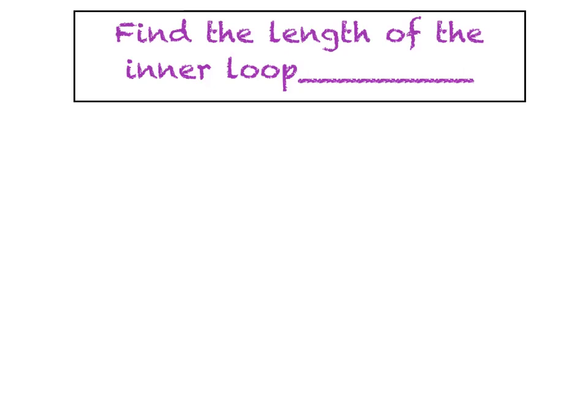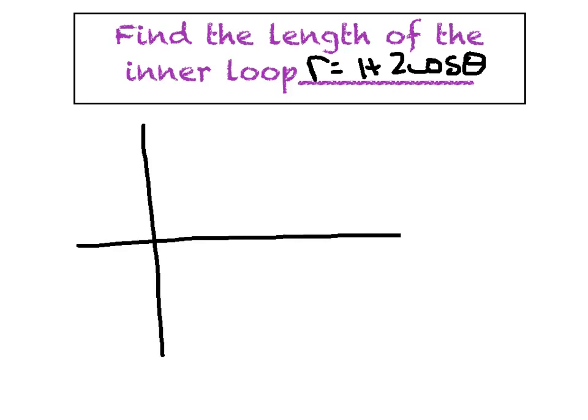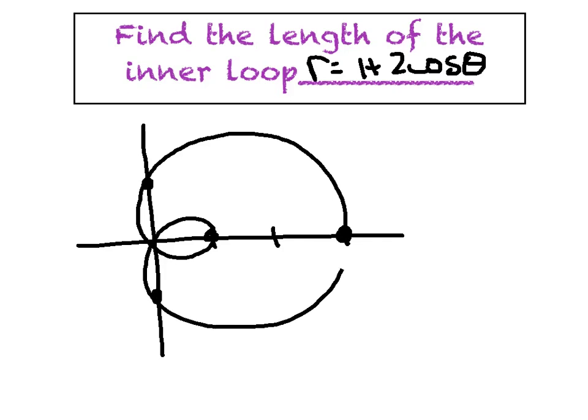Our next one, we're going to talk about, instead of the length of the entire curve, let's find just the length of the inner loop for the curve R equals 1 plus 2 cosine of theta. So we've got a nice limaçon with the inner loop. And let's see what this rascal would look like. It's going to start all the way out here at 3. It's going to shoot up to 1 and then negative 1 and then 1. And so our curve looks like this.